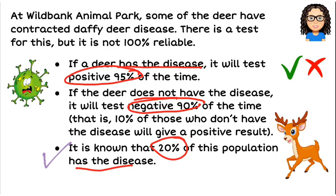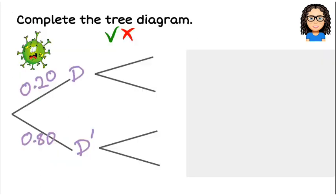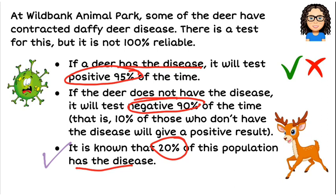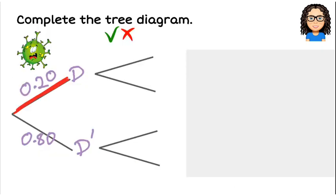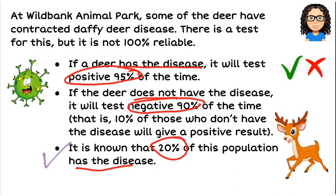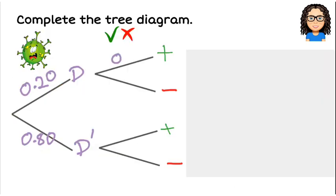Now I'll go back to the first piece of information. If a deer has the disease, so if it is in this branch, then it will test positive 95% of the time. So it could be positive or it could be negative. We were told that if it has the disease it will be positive 95% of the time, which means 5% of the time a deer that has the disease will be negative.